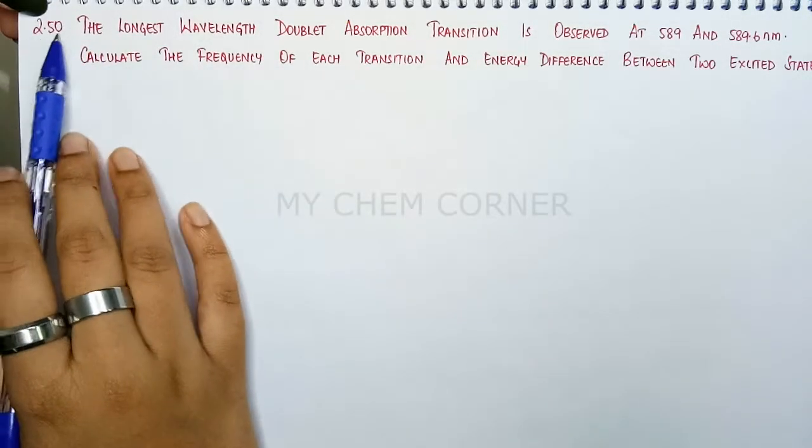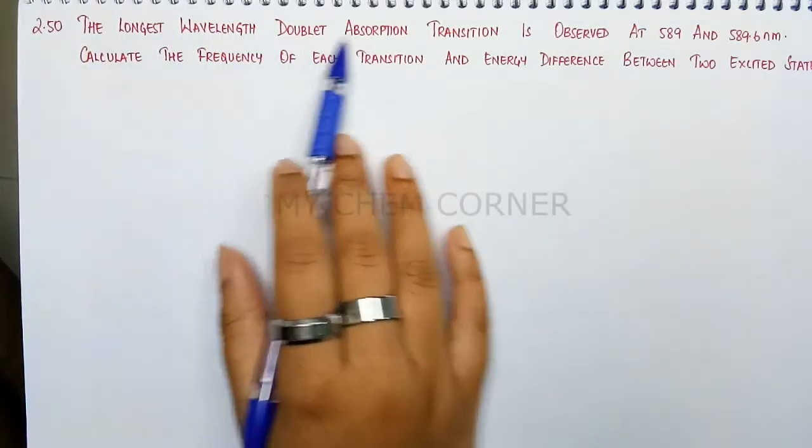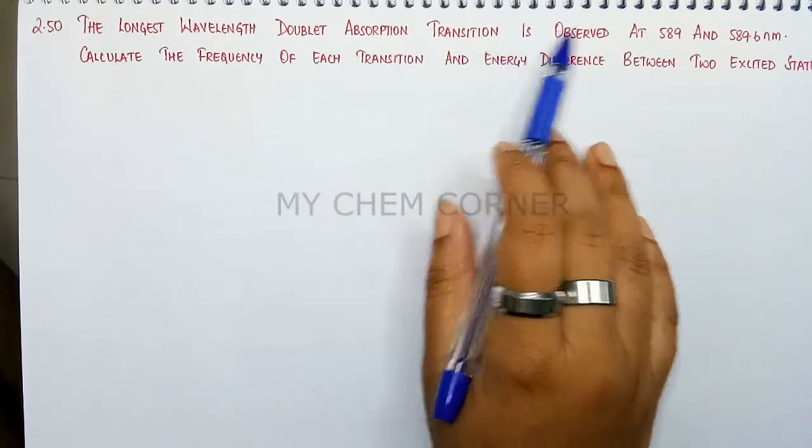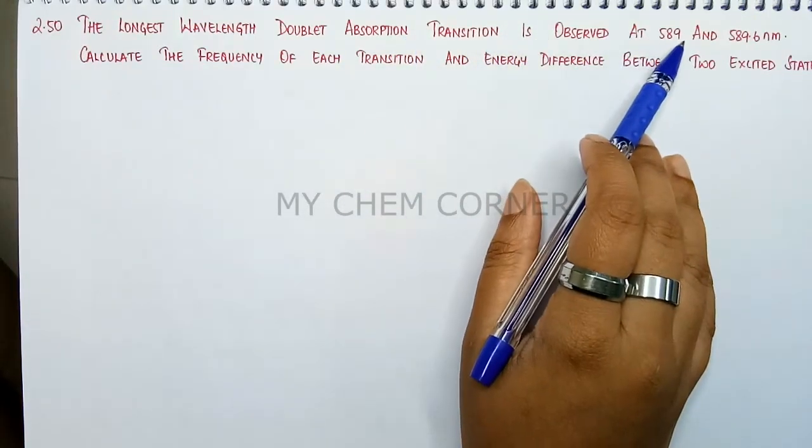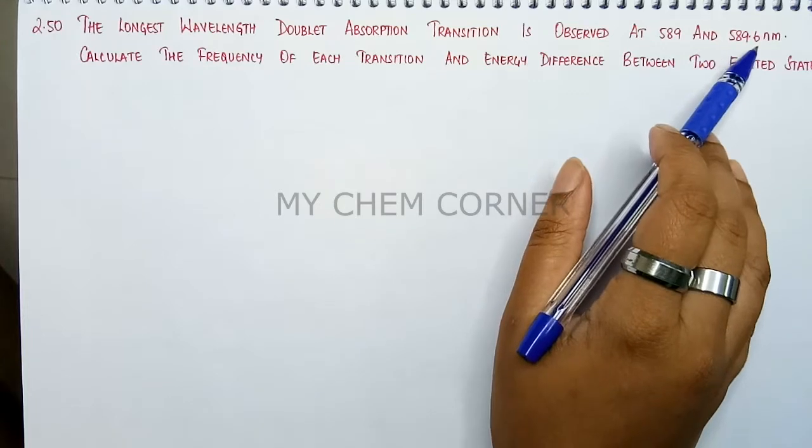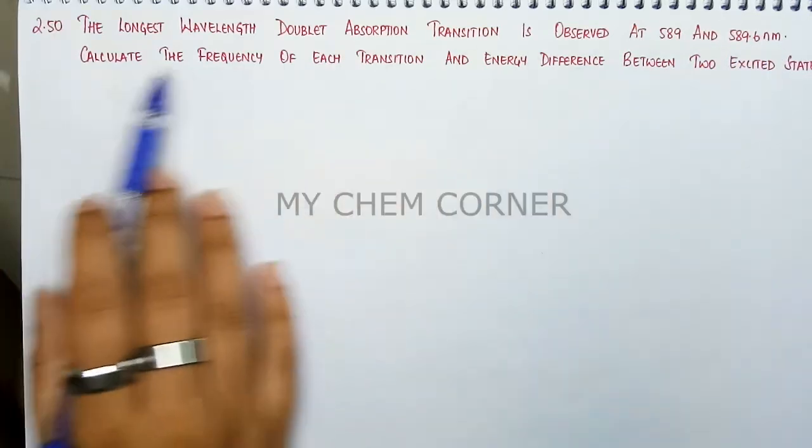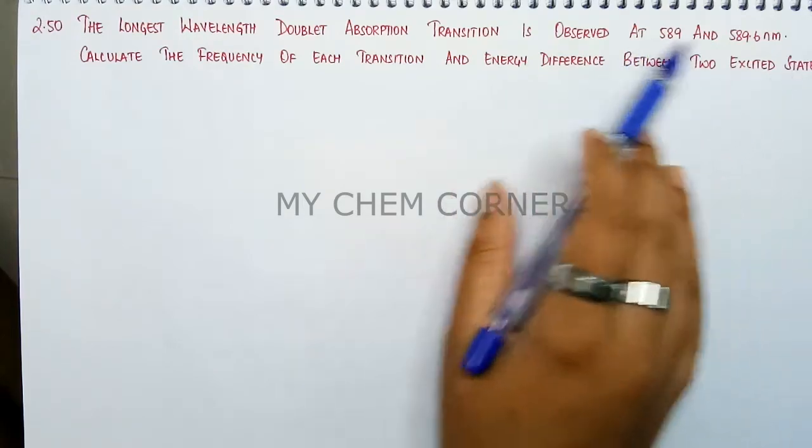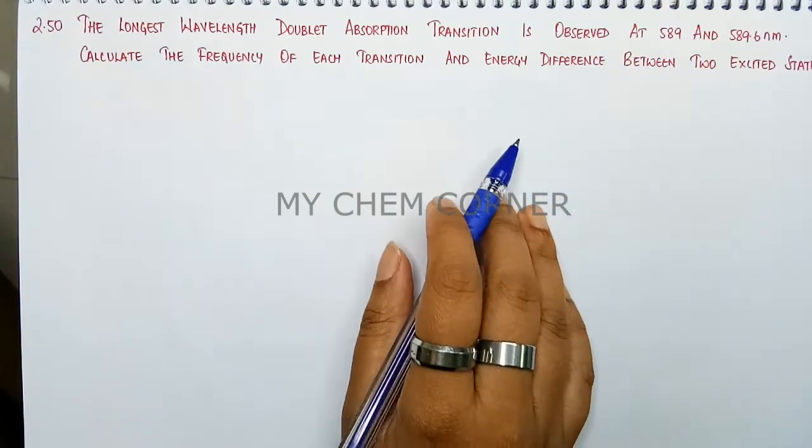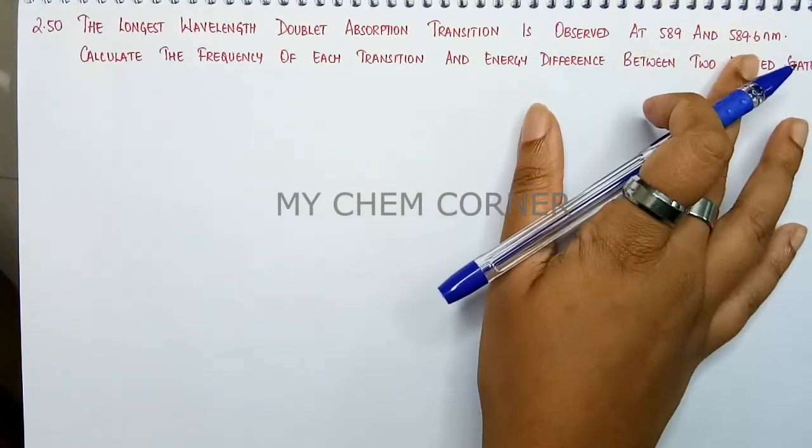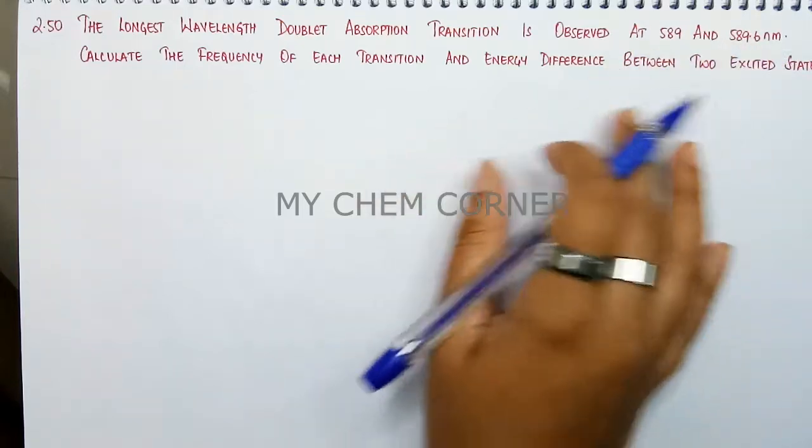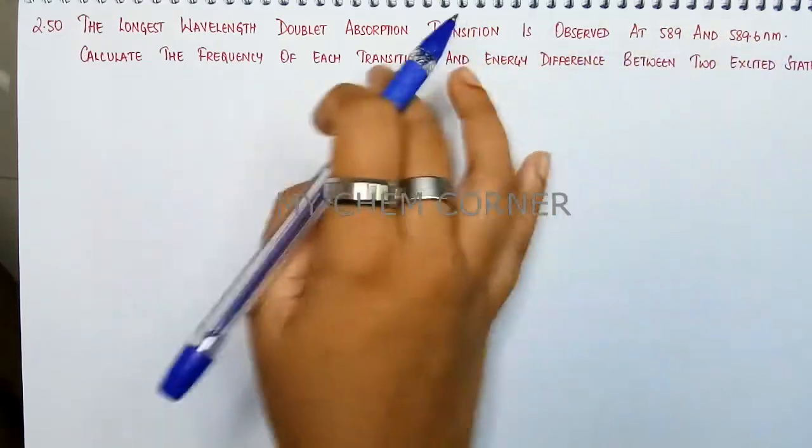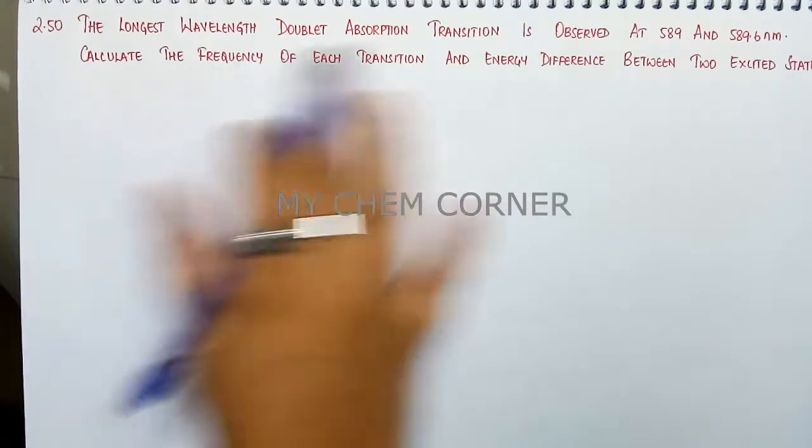Question number 2.50: The longest wavelength doublet absorption transition is observed at 589 nanometer and 589.6 nanometer. Calculate the frequency of each transition and energy difference between the two excited states. We basically have two different wavelengths. We should calculate the two different energies in two different circumstances and find the difference between them. Simple problem again.